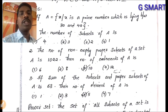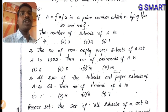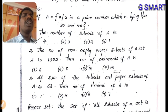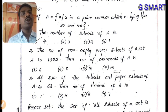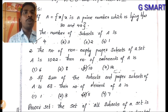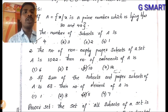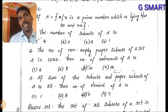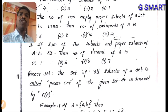Problem: the sum of the number of subsets and proper subsets of A is 63; find the number of elements. Number of subsets = 2^n, proper subsets = 2^n − 1, so 2^n + (2^n − 1) = 63, which gives 2·2^n = 64 = 2^6, so 2^(n+1) = 2^6, meaning n + 1 = 6, and n = 5.